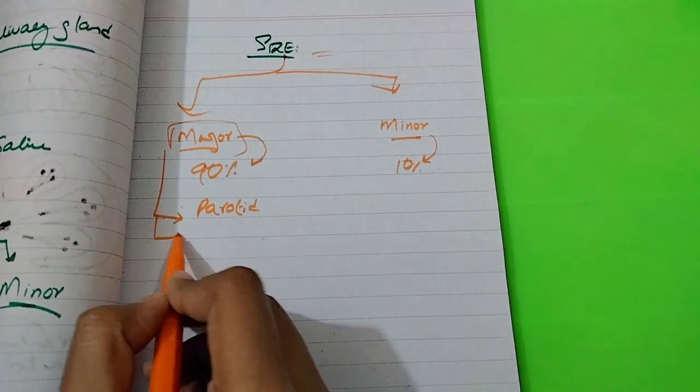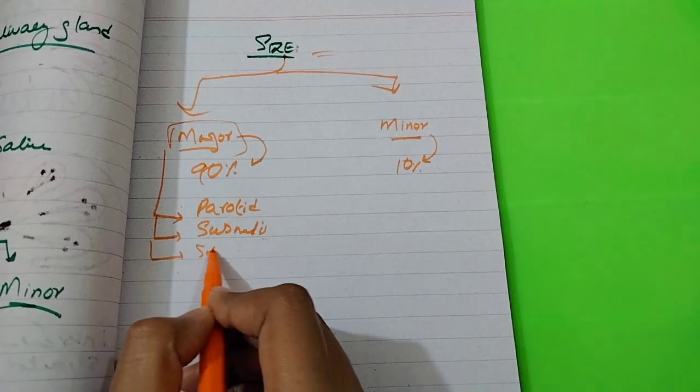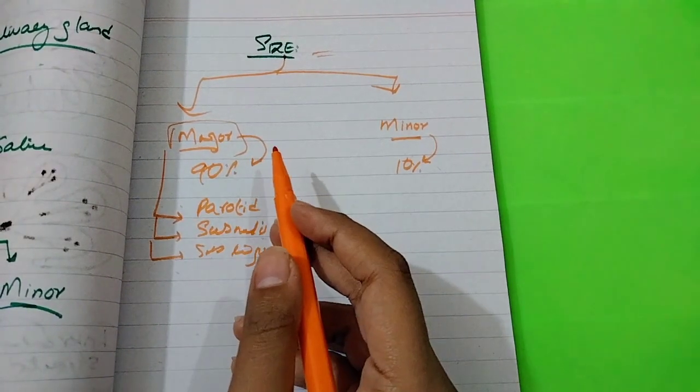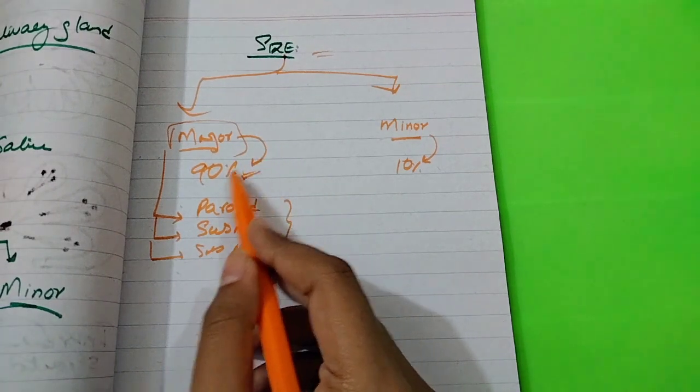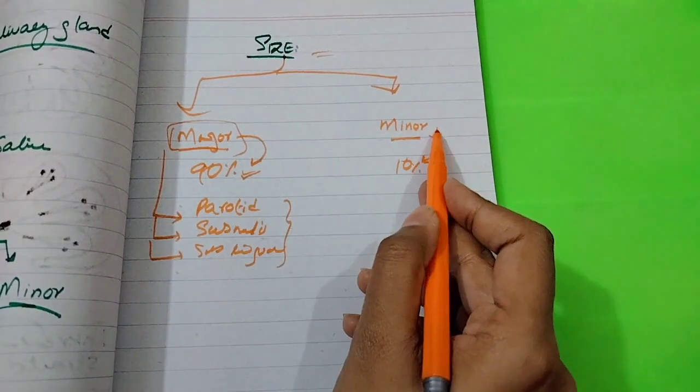First, we have parotid salivary gland. Then we have submandibular glands, and then we have sublingual glands. These three major glands secrete 90% of saliva.